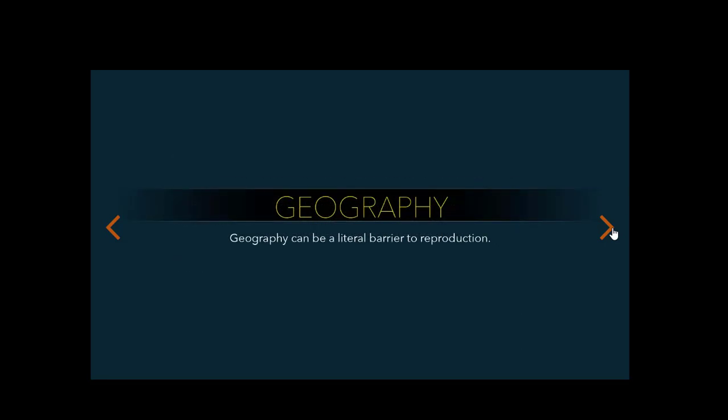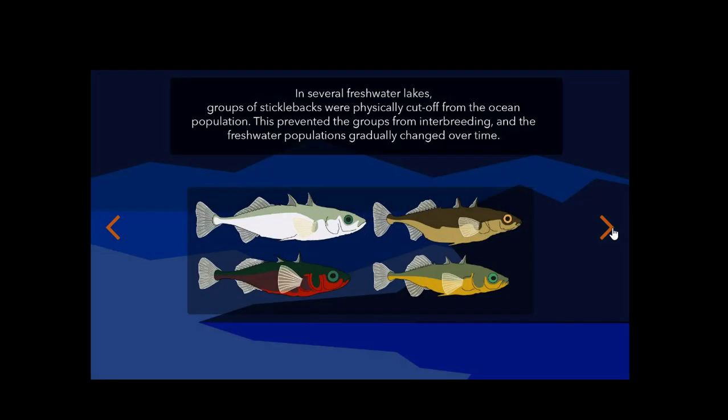Geography can be a literal barrier to reproduction. In several freshwater lakes, groups of sticklebacks were physically cut off from the ocean population. This prevented the groups from interbreeding, and the freshwater populations gradually changed over time.